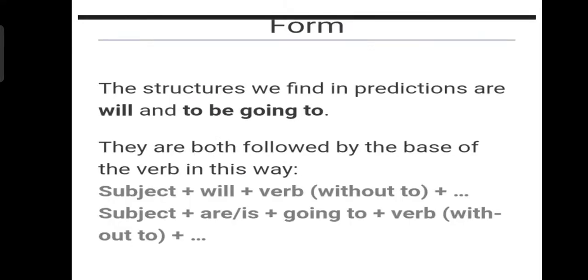Okay, so let's see the structure we find in predictions are will and to be going to. They are both followed by the base of the verb. The first one is future simple: subject plus will then first form of the verb without to.